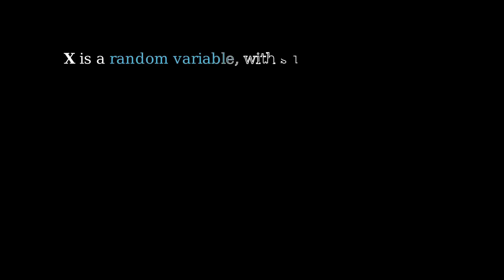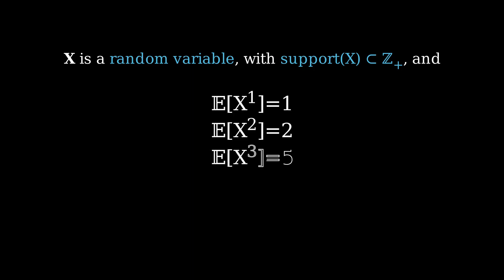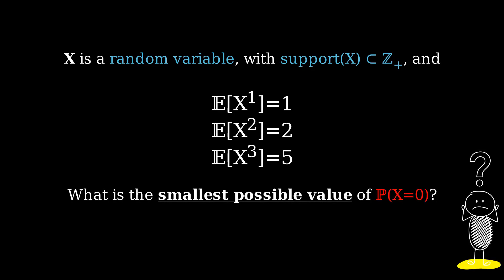X is a random variable taking positive integer values and having expectation of X equals 1, expectation of X squared equals 2, and expectation of X cubed equals 5. What is the smallest value that the probability of X equals 0 can take?